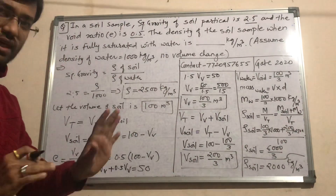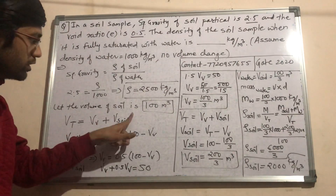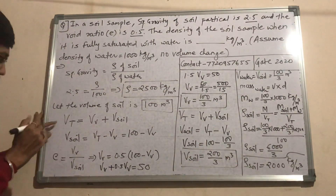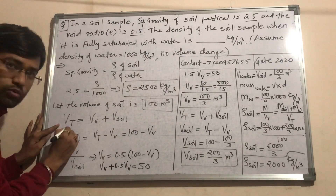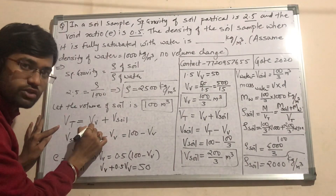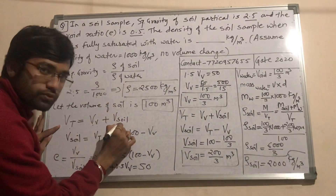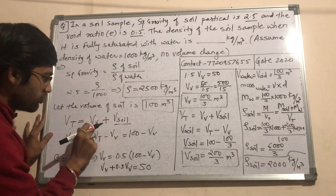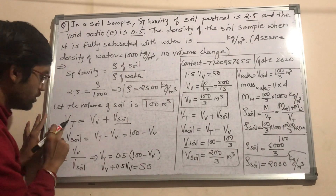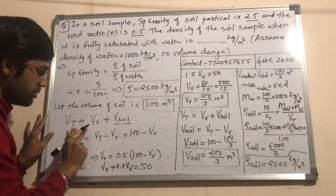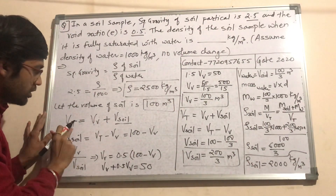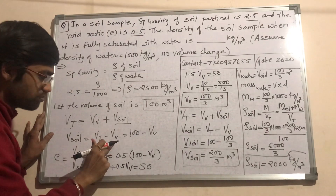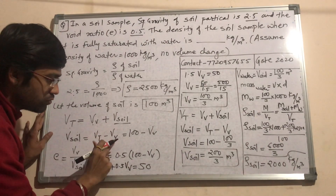Now let us assume the total volume of soil is 100 meter cube — you need to assume this quantity. You know that total volume is equal to volume of void (Vv) plus volume of soil. So volume of soil equals total volume minus volume of void, that is 100 minus Vv.